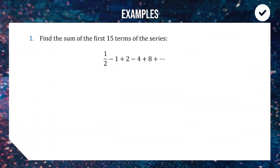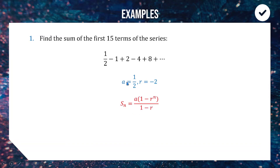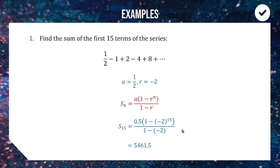First example: we have a geometric series starting with a = ½, multiplying by -2 each time (doubling and changing sign). We want S₁₅ — the sum of the first 15 terms. Substituting a = ½, r = -2, n = 15 into the formula — make sure you use brackets around the negative r value. This gives us a value of 5461.5, which is what the first 15 terms add up to.